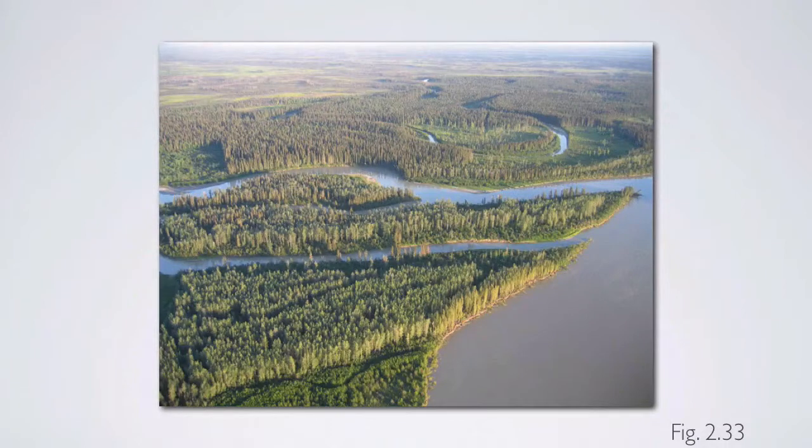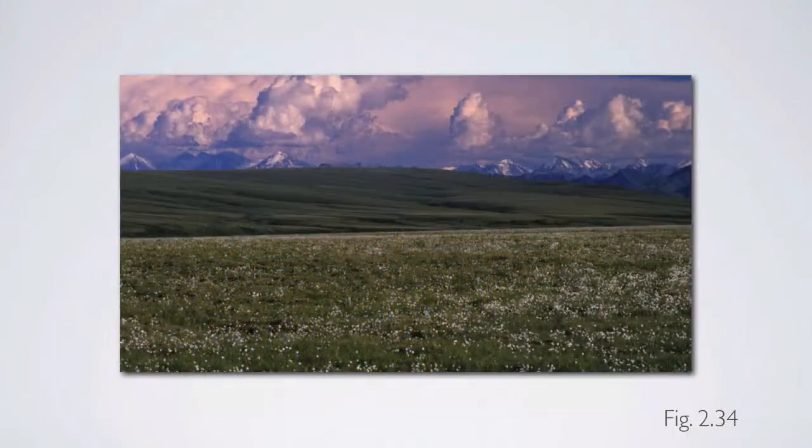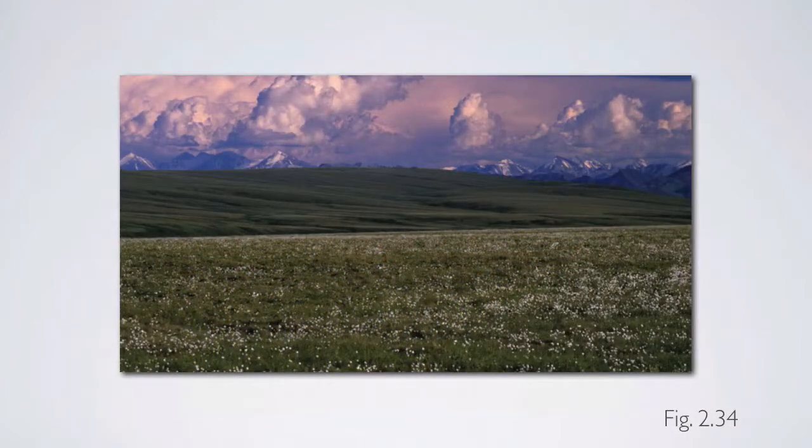As you move further north in North America, you get up into the boreal forest. And this is a picture from the Tanana River Valley in interior Alaska. When you get even further north of the boreal, you're into the tundra. And this is Arctic tundra near Toolik Lake, near the Brooks Range, which you can see in the background.